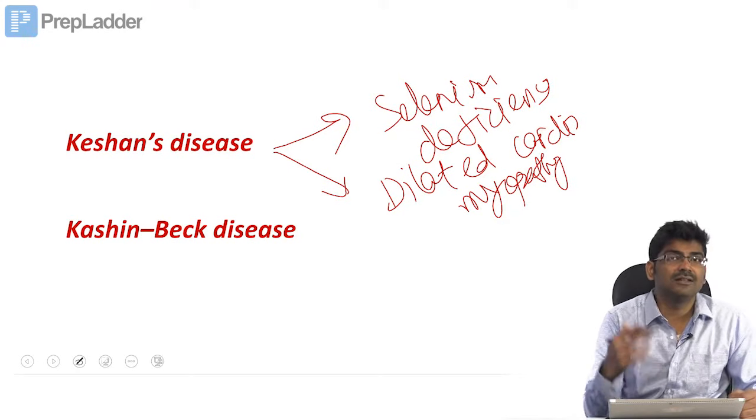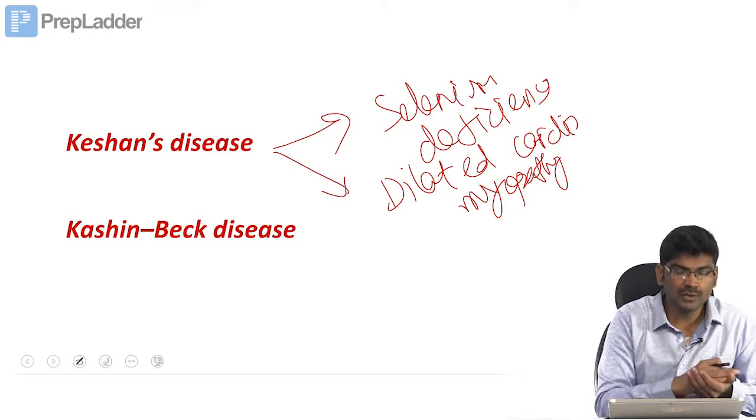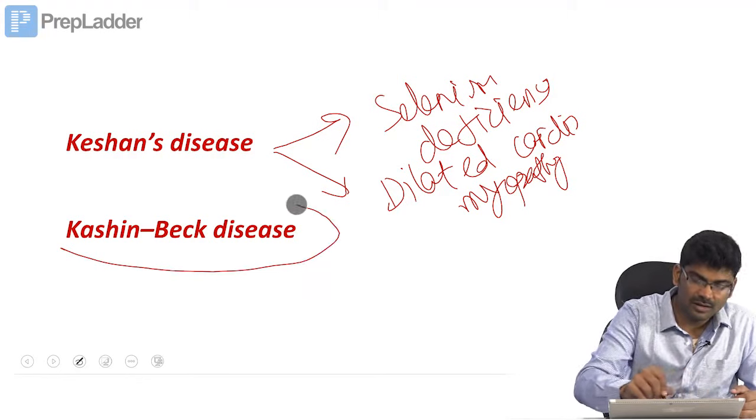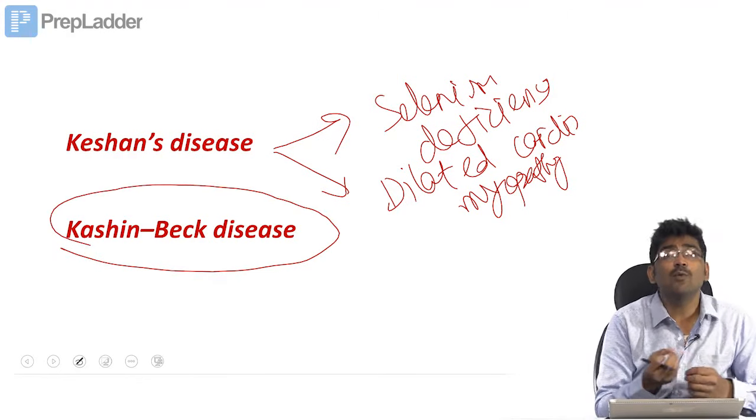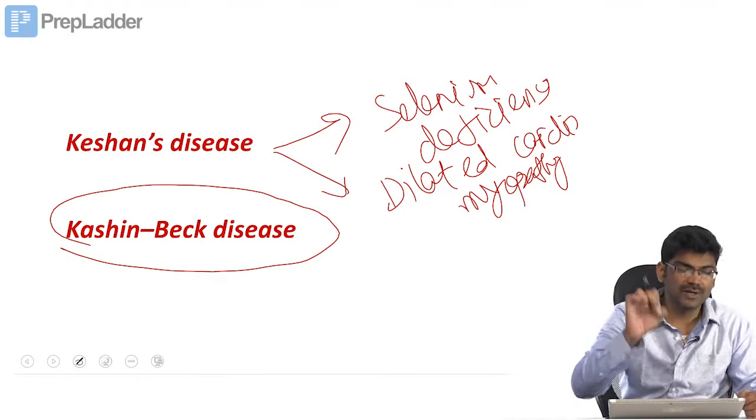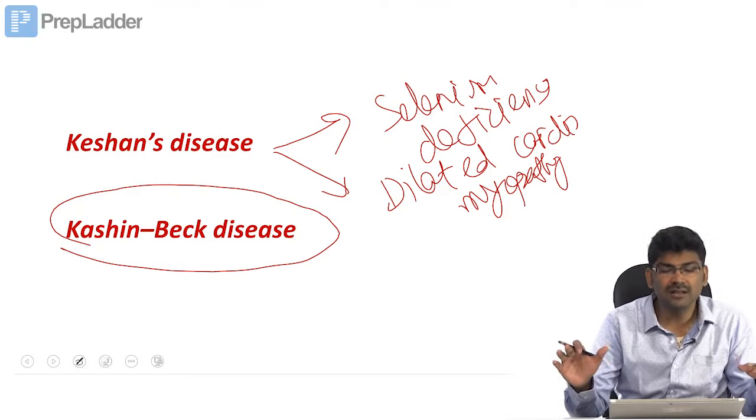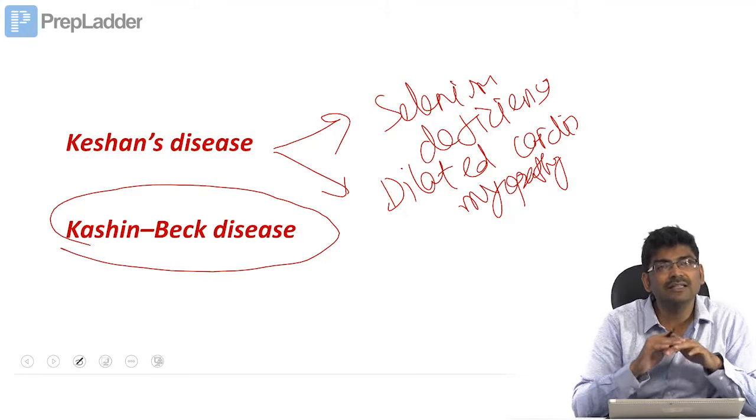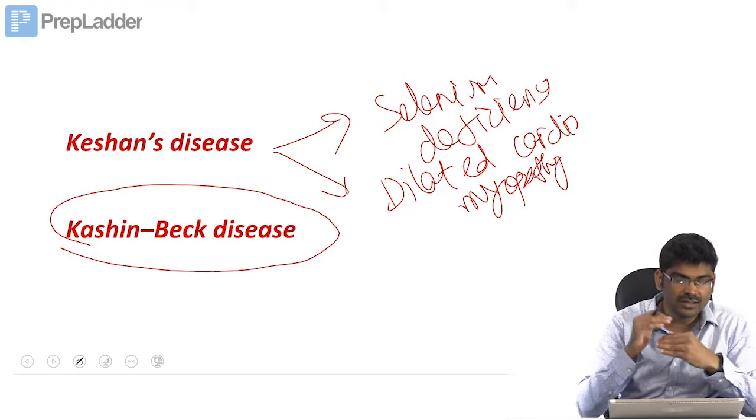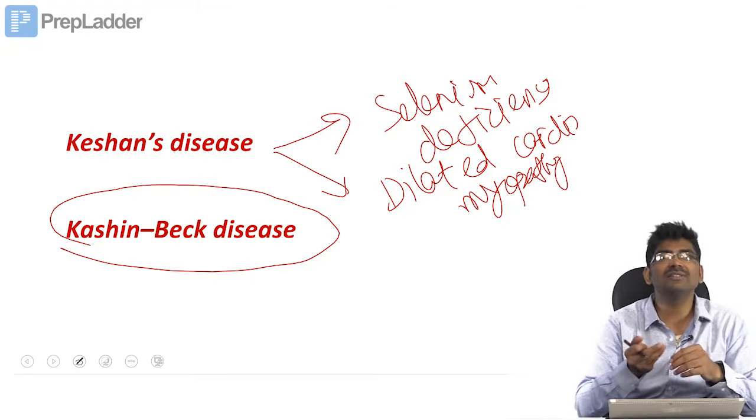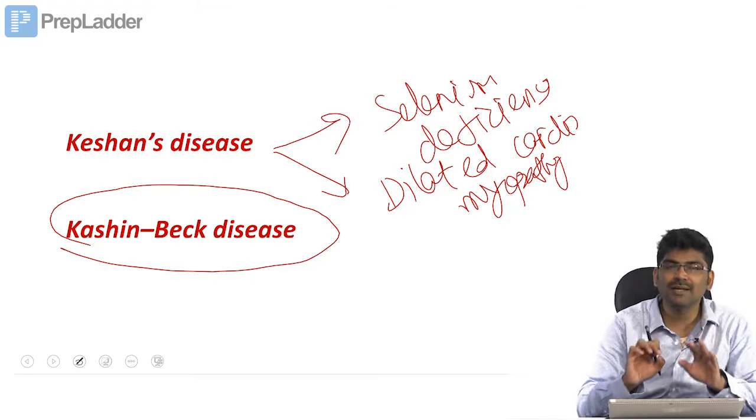Kashin-Beck disease, this is an endemic osteochondropathy. Selenium deficiency is one of the suspected causes for this. In Keshan's disease, selenium deficiency is the established cause. In Kashin-Beck disease, selenium deficiency is one of the suspected causes.